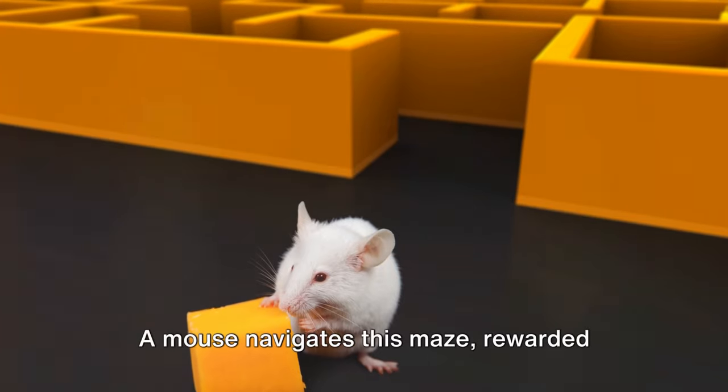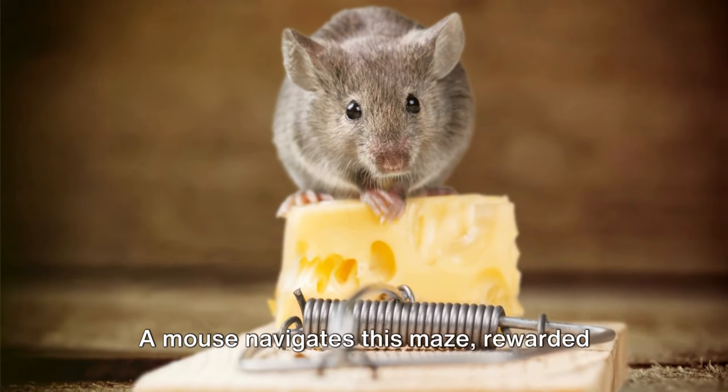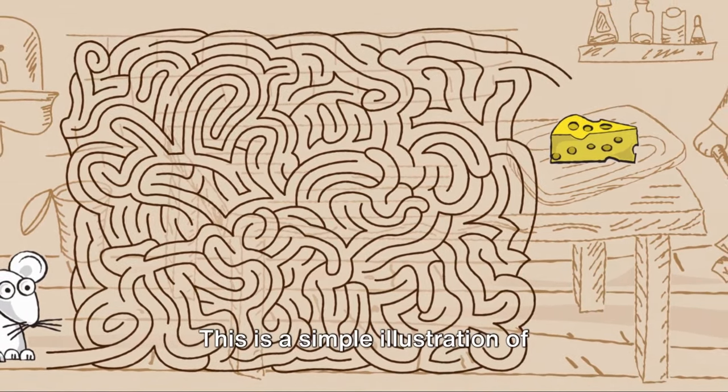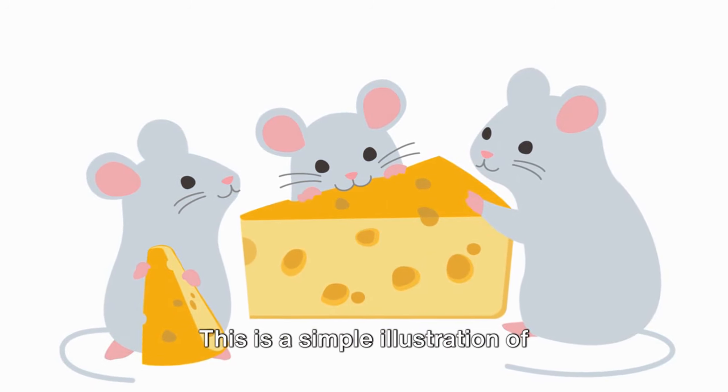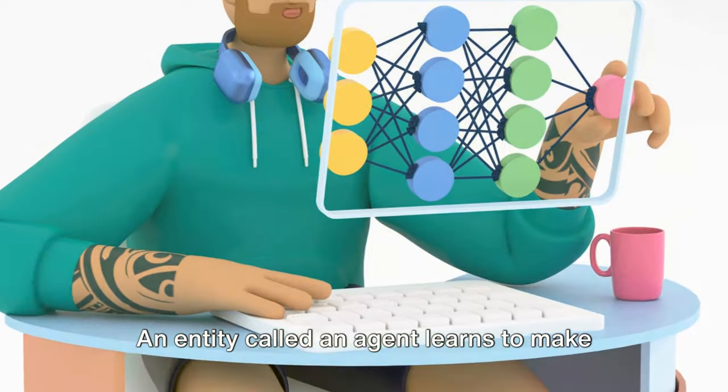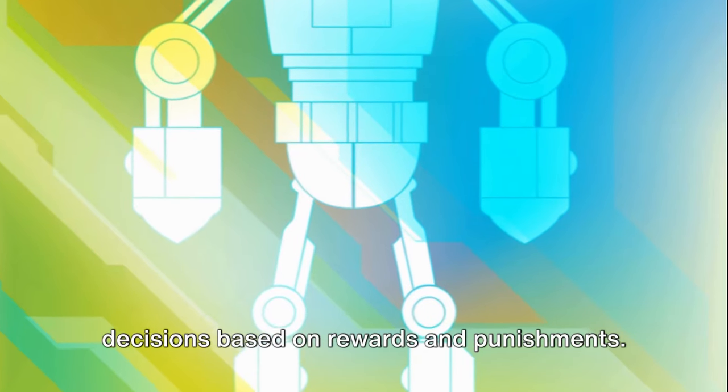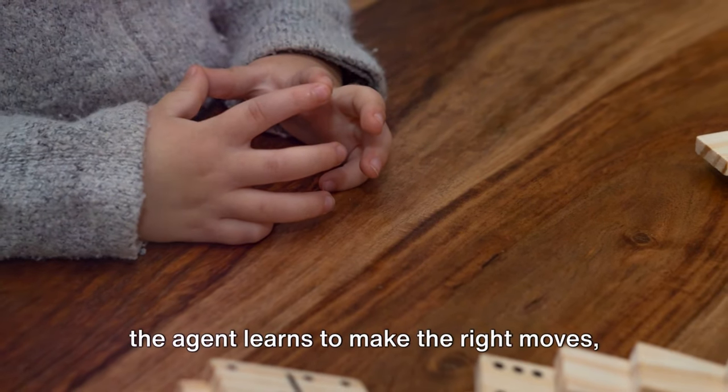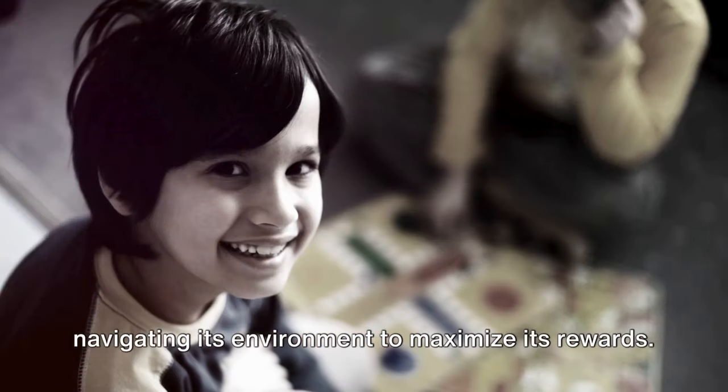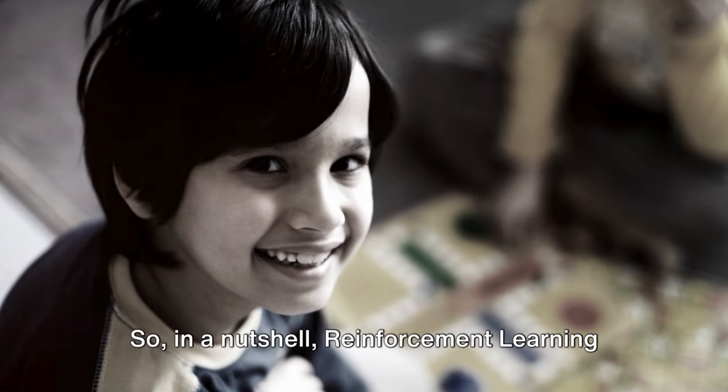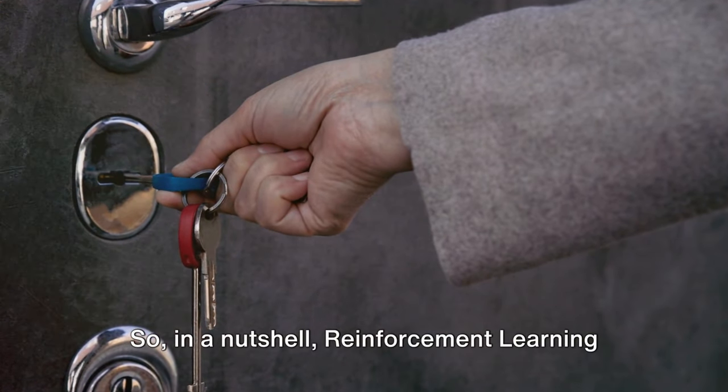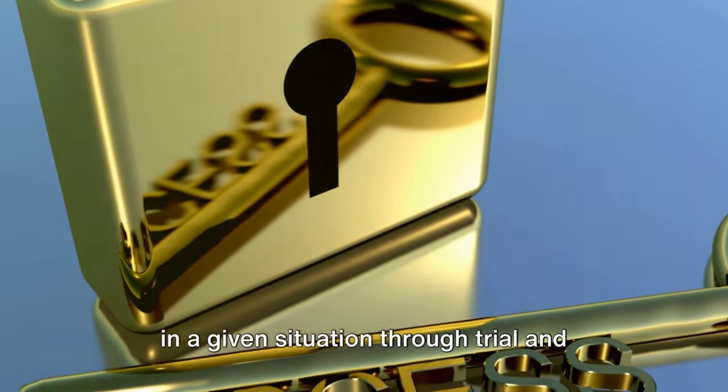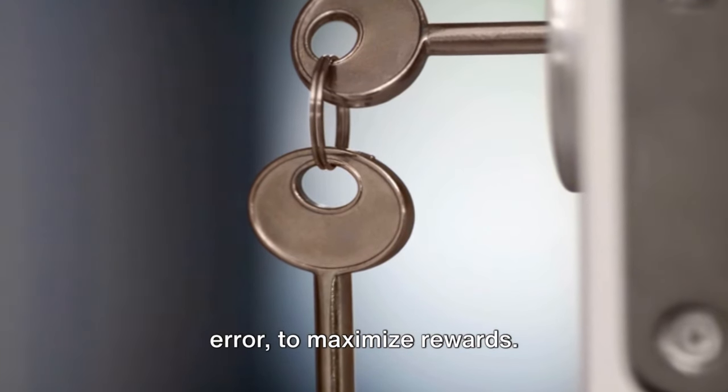Imagine a maze with cheese at the end. A mouse navigates this maze, rewarded with cheese if it reaches the end, and nothing if it fails. This is a simple illustration of reinforcement learning. An entity called an agent learns to make decisions based on rewards and punishments. It's like a game of hot and cold where the agent learns to make the right moves, navigating its environment to maximize its rewards. So in a nutshell, reinforcement learning is about learning the best action to take in a given situation through trial and error to maximize rewards.